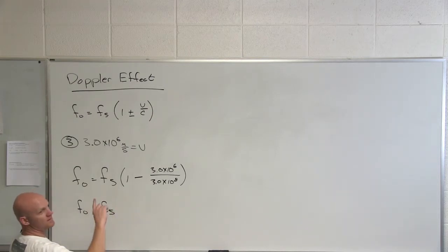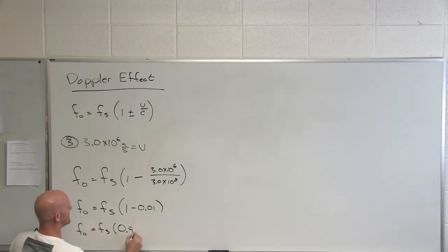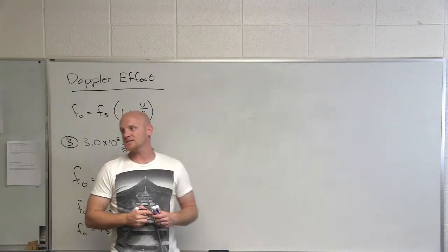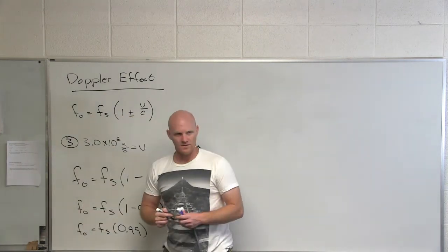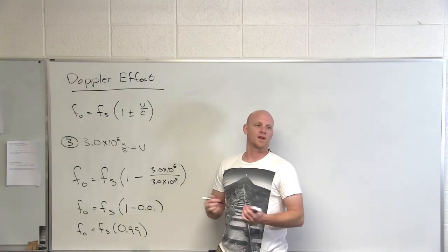Yeah, 0.01. And so this ends up being 1 minus 0.01 or frequency observed equals frequency of the source times 0.99. And so in this case, we already predicted it was a decrease. And by what percent was it a decrease? A 1% decrease. Cool.